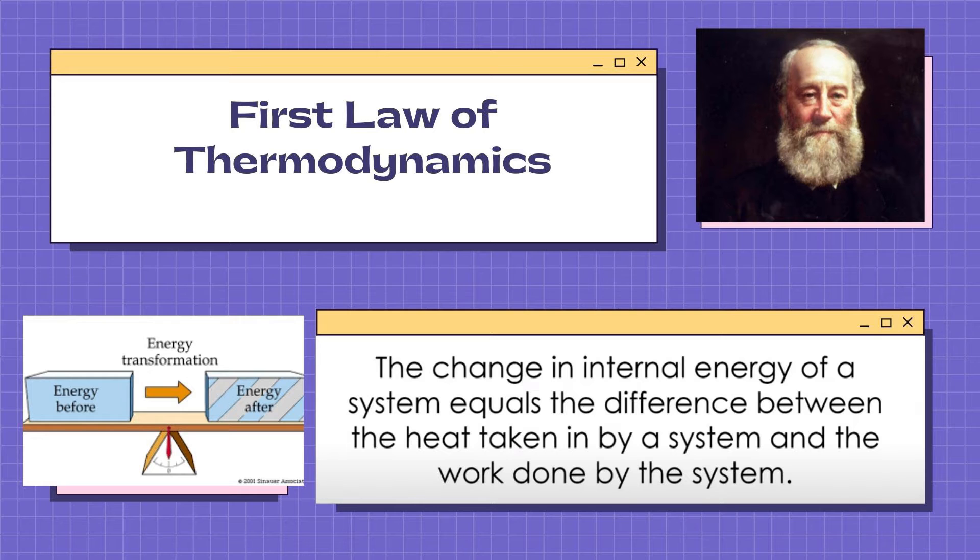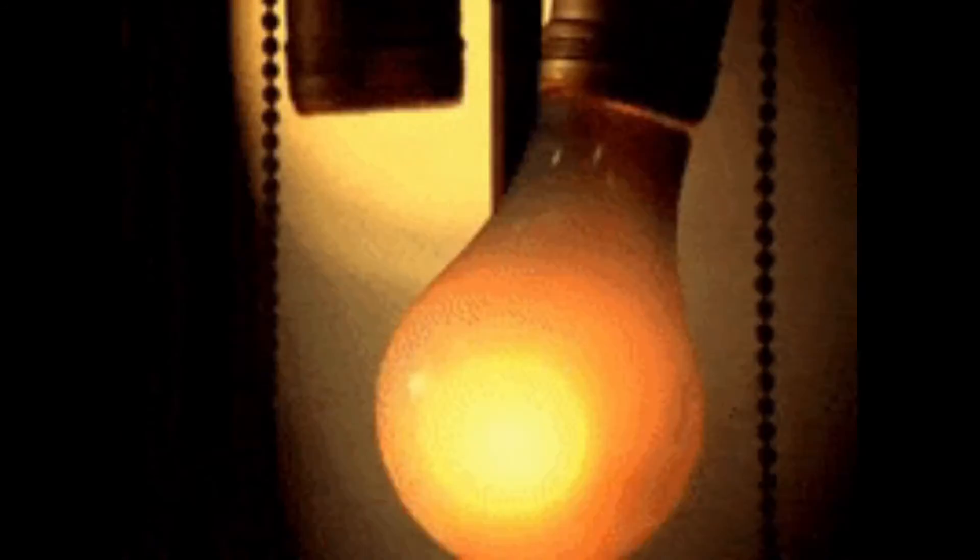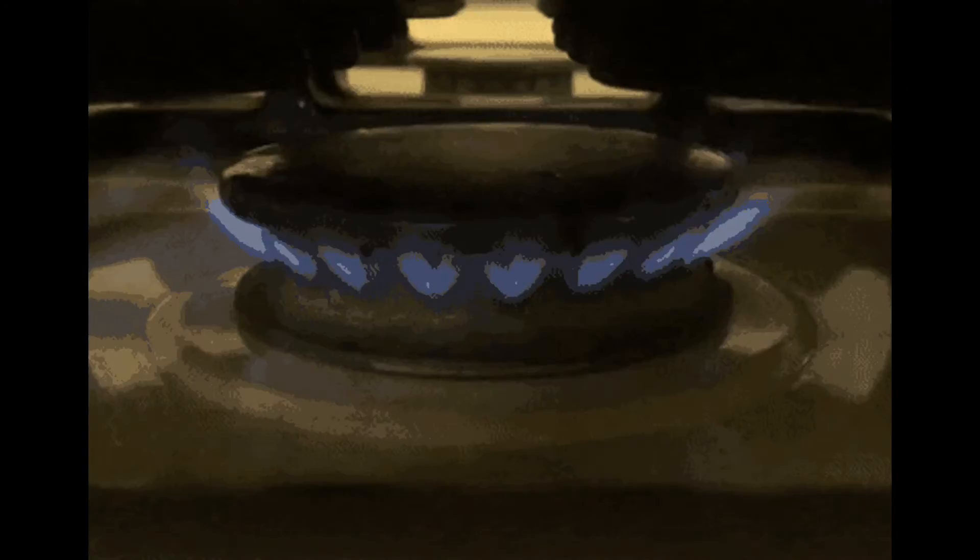According to the first law of thermodynamics, the total amount of energy in the universe is constant. Energy can be transferred from place to place or transformed into different forms, but it cannot be created or destroyed. The transfer and transformation of energy takes place around us all the time. For instance, light bulbs transform electrical energy into light energy, and gas stoves transform chemical energy from natural gas into heat energy.